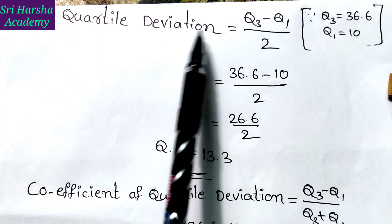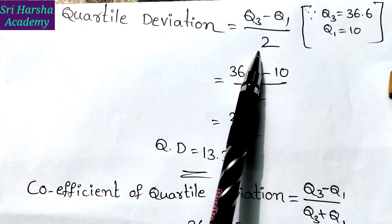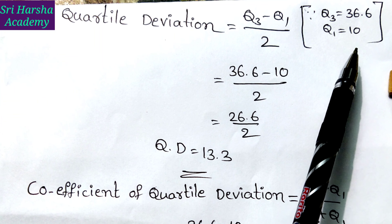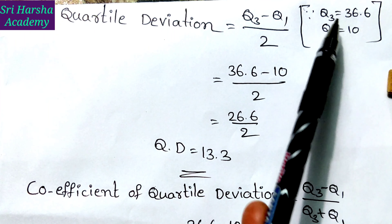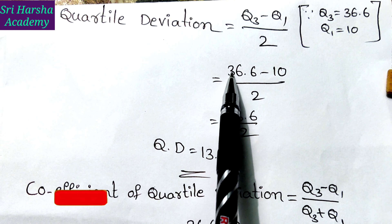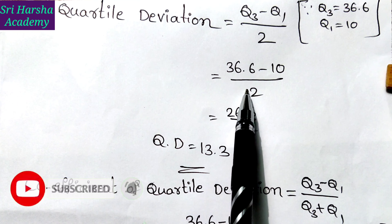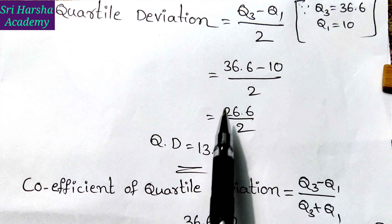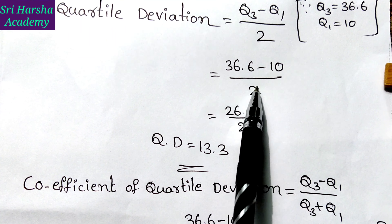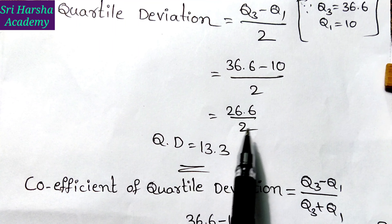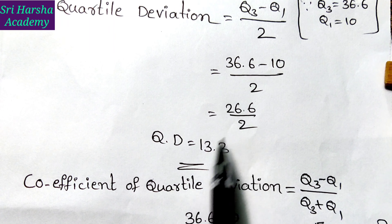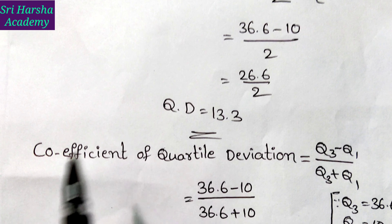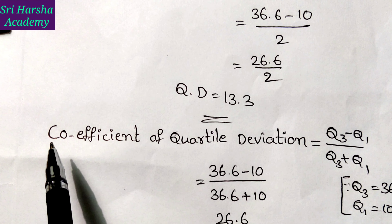The quartile deviation formula is Q3 minus Q1 by 2. Q3 value is 36.6 and Q1 value is 10. Substituting these two values: 36.6 minus 10 by 2. 36.6 minus 10 gives 26.6, and 26.6 divided by 2 gives 13.3. This is the value of quartile deviation.